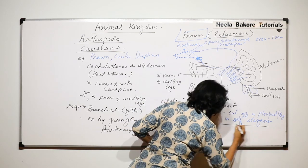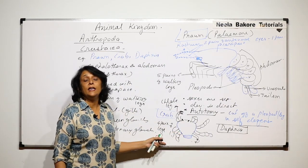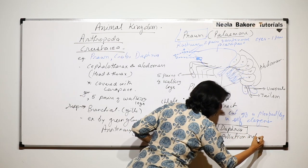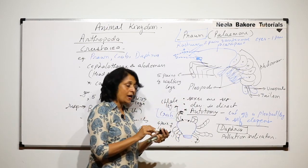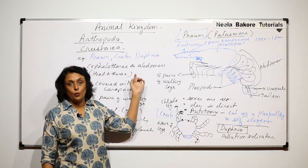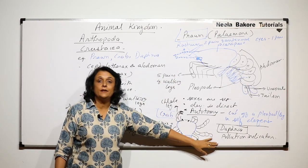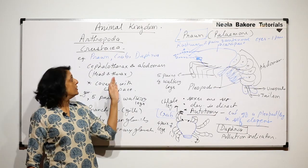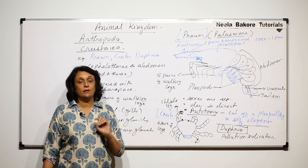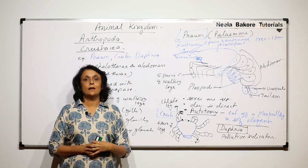The third example is Daphnia, which is of high economic importance as a pollution indicator. To summarize, these three — prawn, crab, and Daphnia — are important examples of Class Crustacea in Phylum Arthropoda. General characteristics include the body divided into cephalothorax and abdomen, which is the most important characteristic feature. In the next video, we will talk about the other classes of this phylum.